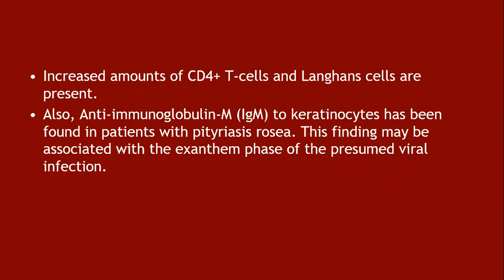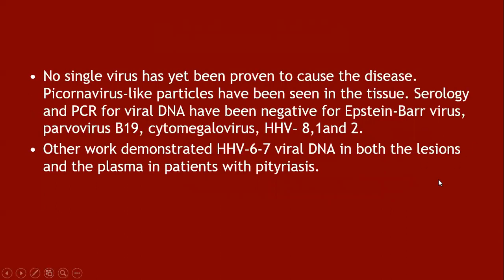Increased amounts of CD4-positive T cells and Langerhans cells are present, and anti-immunoglobulin M antibodies to keratinocytes have been found in patients with pityriasis rosea — findings possibly associated with the exanthemic phase of the presumed viral infection. No single virus has been proved to cause the disease. Picornavirus-like particles are seen in tissue; serology and PCR for EB virus, parvovirus B19, cytomegalovirus, HHV-8, and herpes 1 and 2 have been negative. However, herpes virus 6 and 7 DNA has been found in both lesions and plasma, making picornavirus and herpes virus 6 and 7 the most commonly suspected agents.